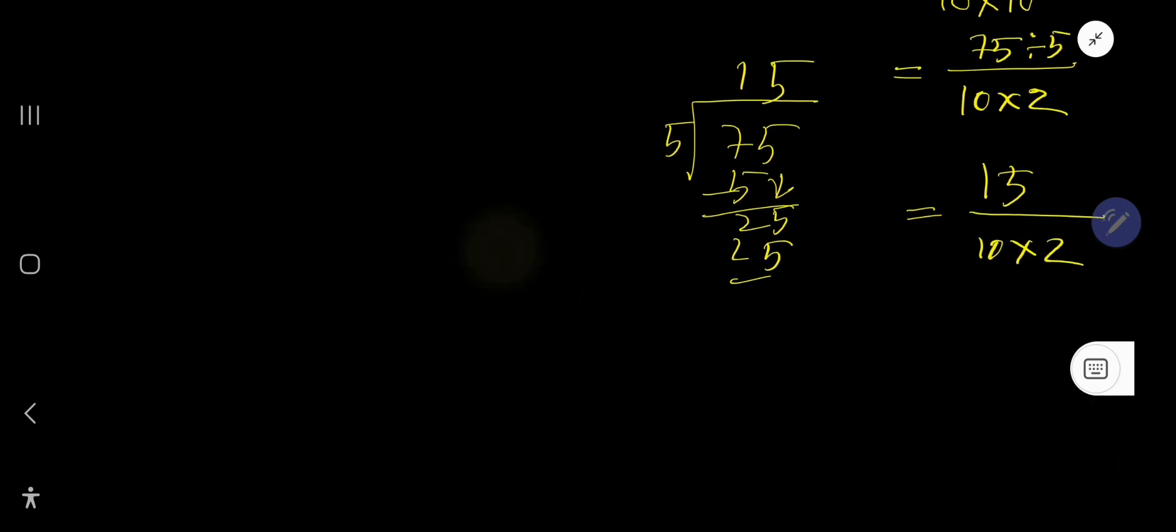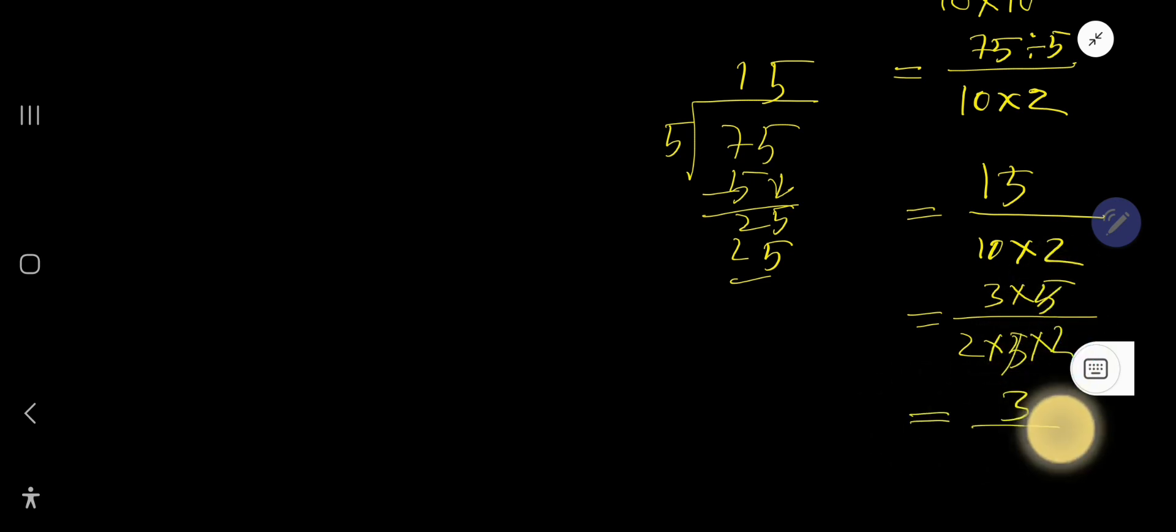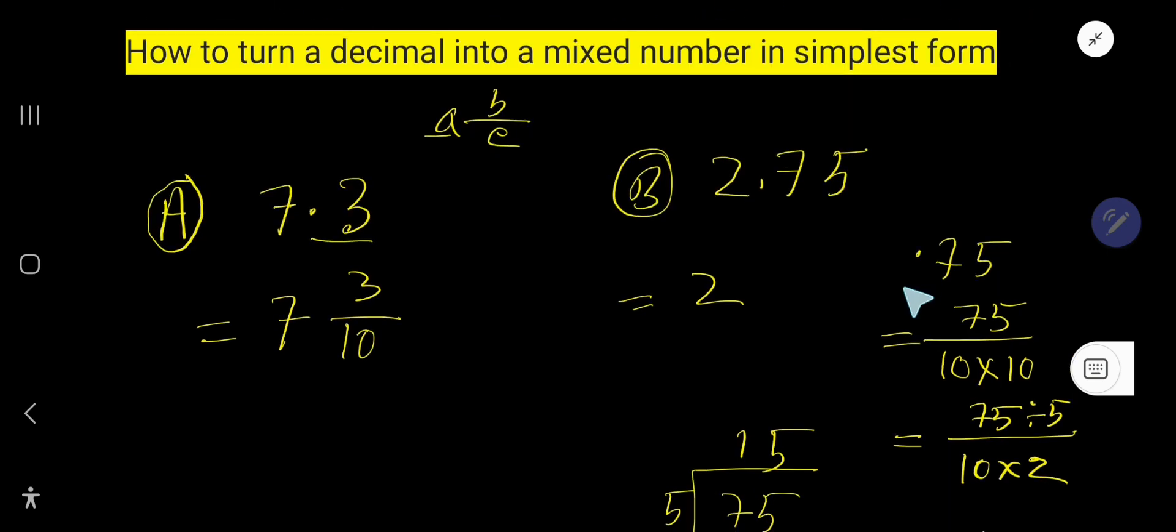You can also break this 15 as 3 times 5, and you can break 20 as 2 times 2 times 5. So this 5 and this 5 cancel each other, so we are getting 3 over 2 times 2, which is 4. 3 over 4. So instead of 0.75, we can write 3 over 4.